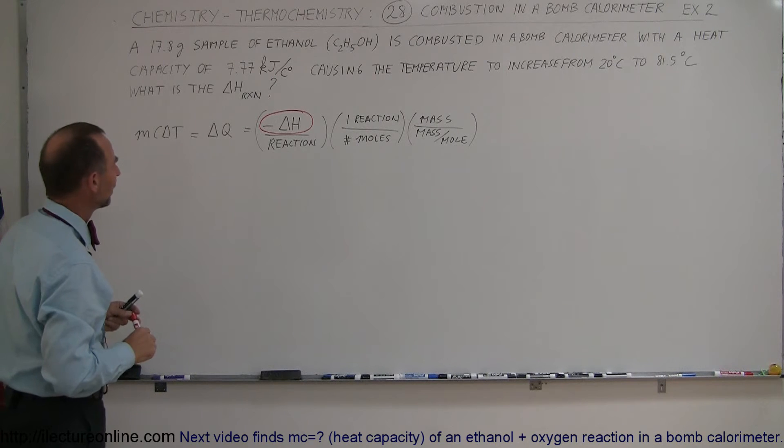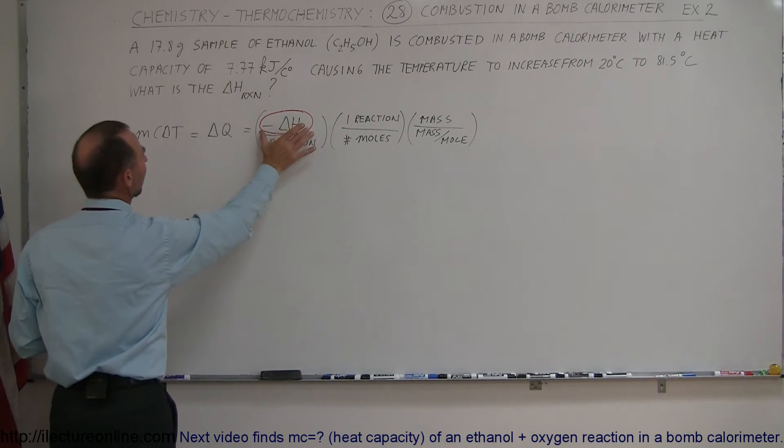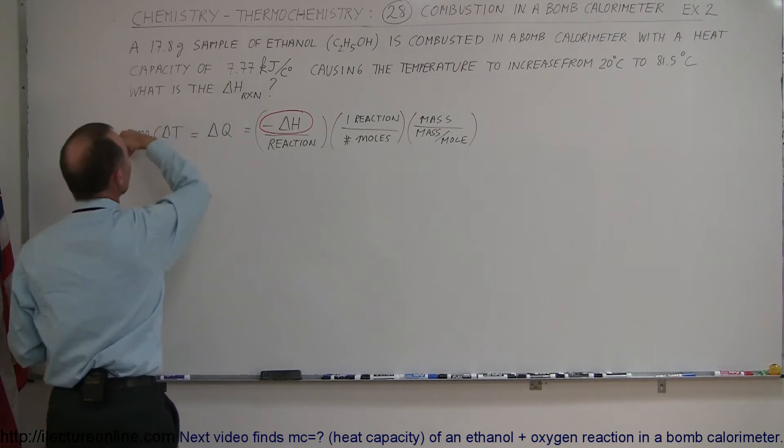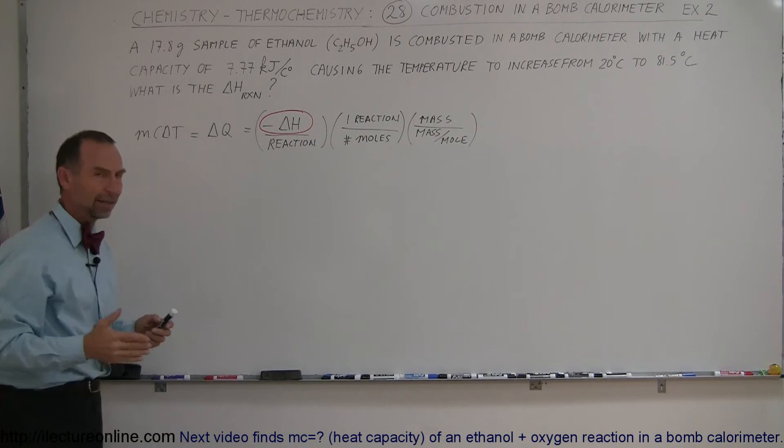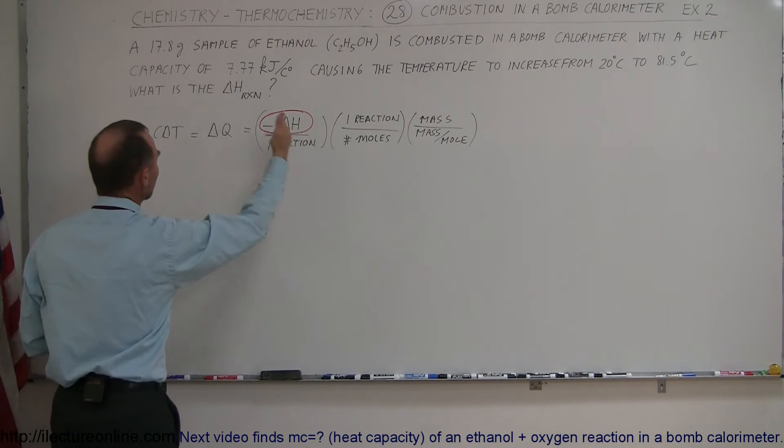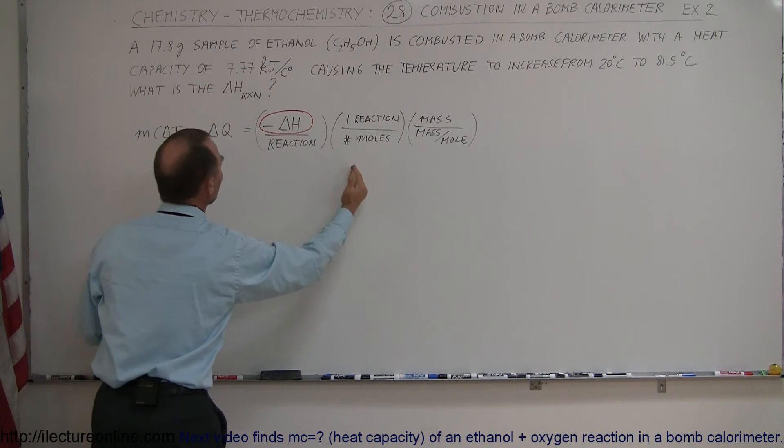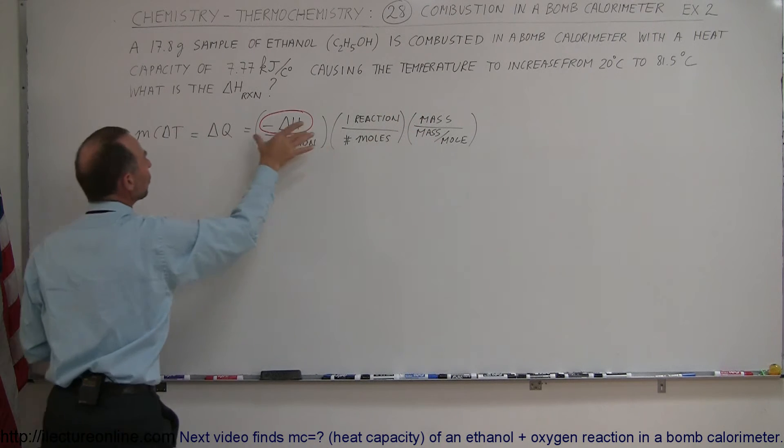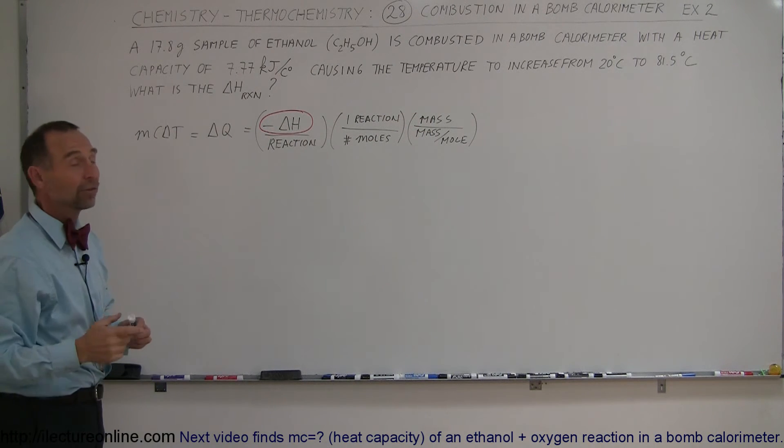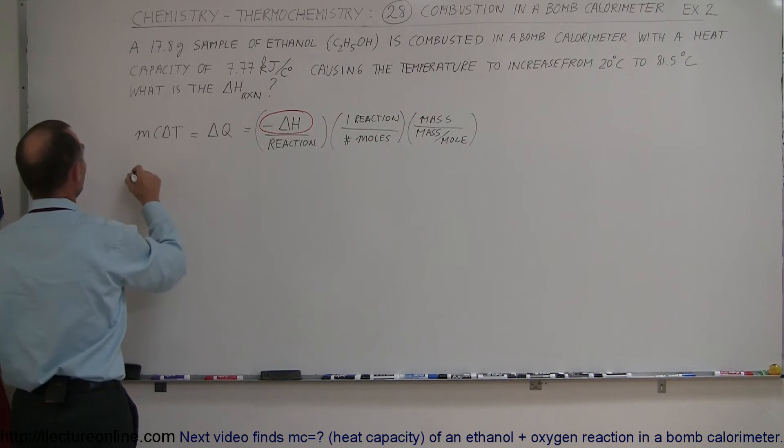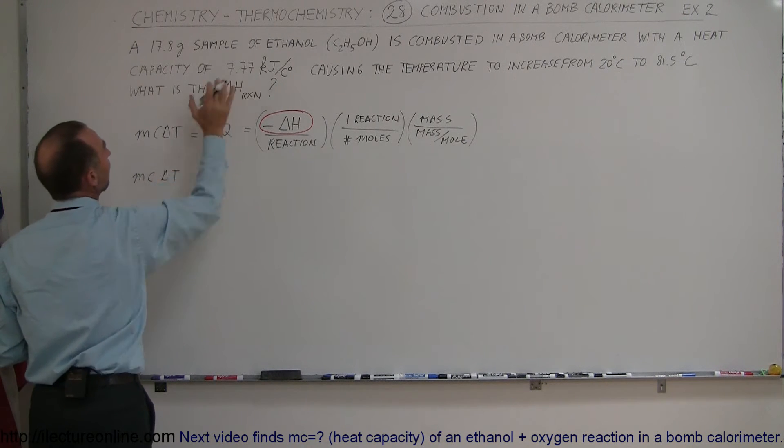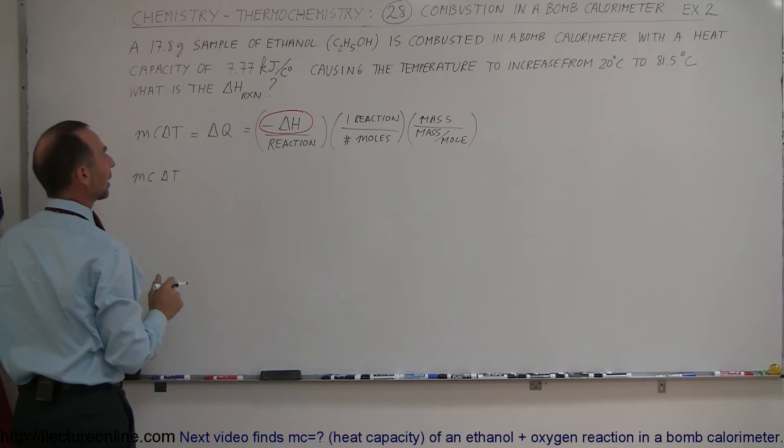How do we do that? We can solve for delta H by taking this part of the equation and moving all the other parts to the left side. Remember that this is a fraction set equal to a fraction. Anything in the denominator moves to the numerator when you cross the equal sign. Anything in the numerator moves down to the denominator. So what we end up with is the MC delta T.